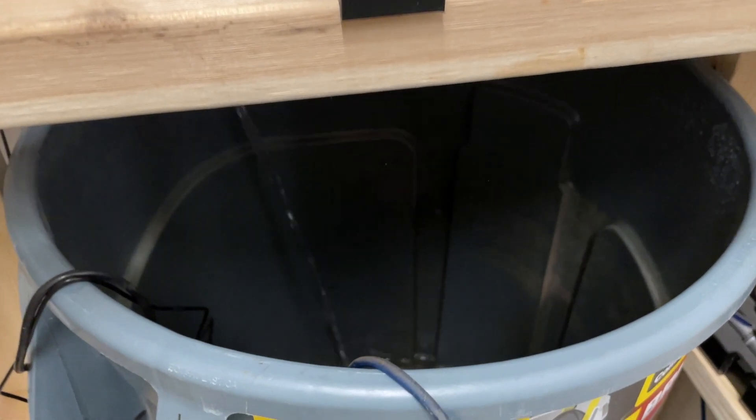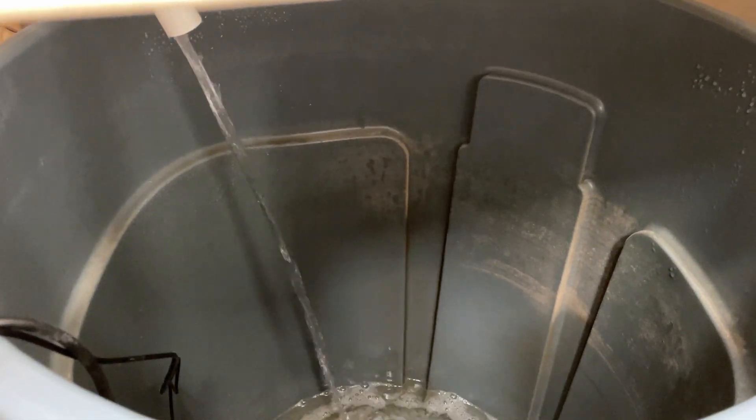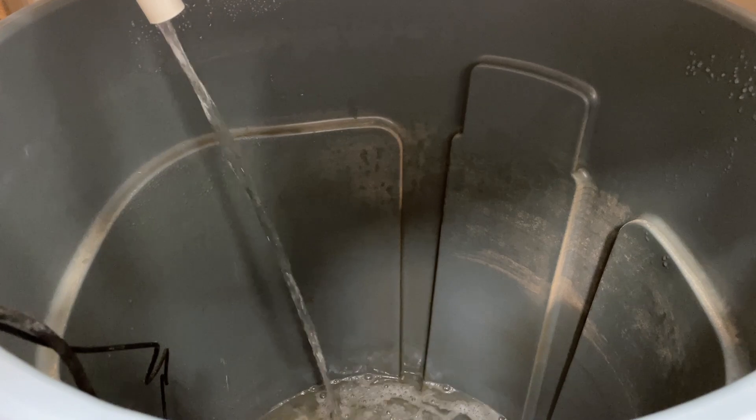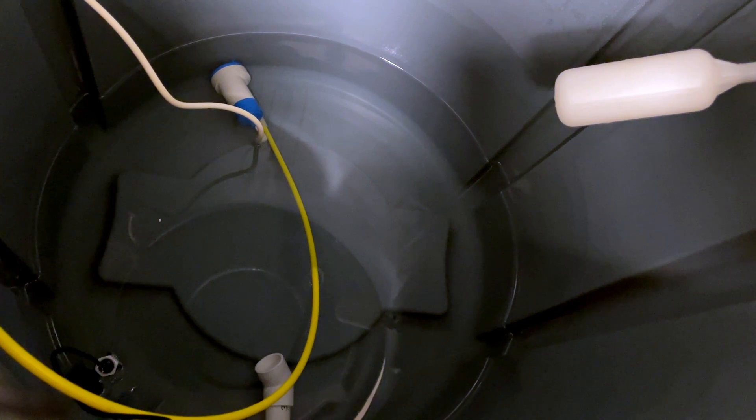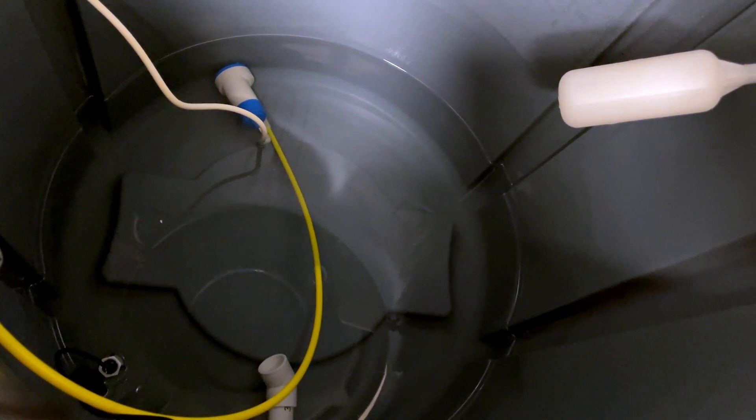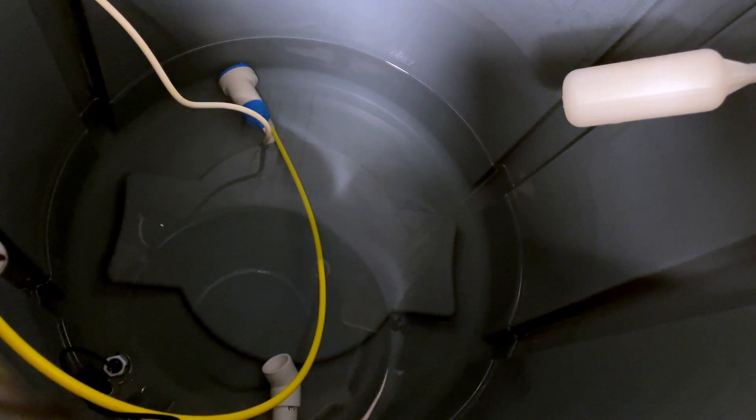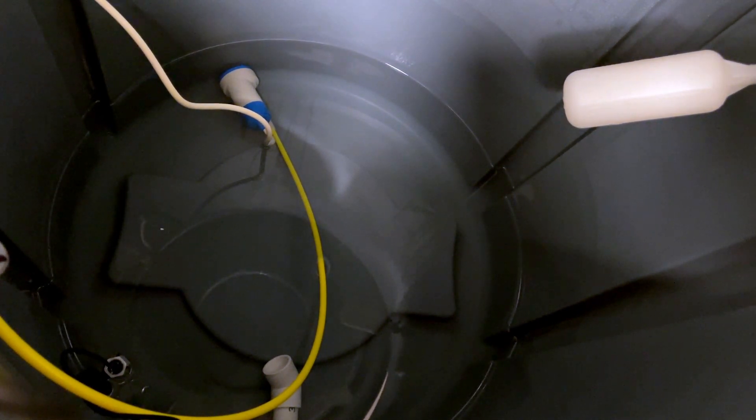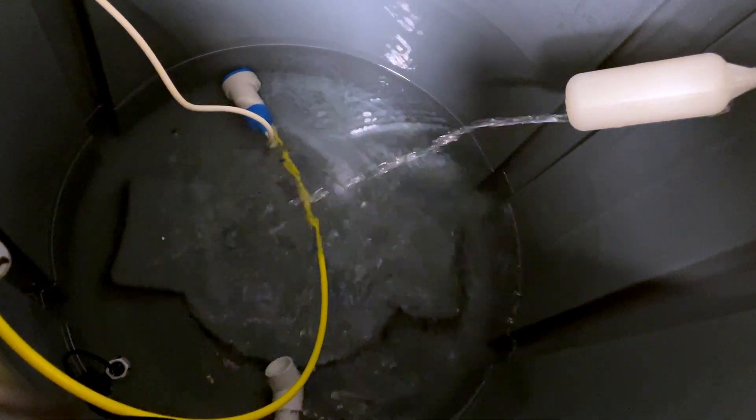So here is what the system looks like in action. I'm first draining my RODI reservoir by filling up my saltwater container below it. You can see at the beginning of this, my RODI system is off and as my RODI reservoir container drains eventually the water will hit the optical sensor, the bottom one and that will trigger my solenoid to turn on and start filling up my container as you see here.